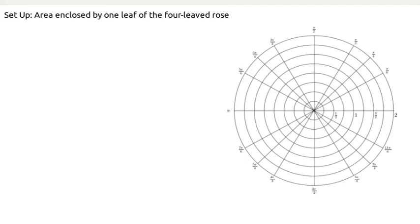So in this example, I'd like to help us get set up to compute the area of one leaf of the four-leaved rose. Remember that the four-leaved rose is the polar function given by this equation: r(θ) = cos(2θ).